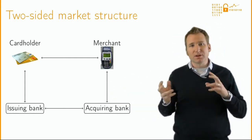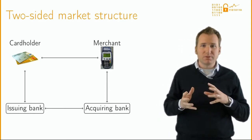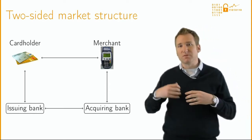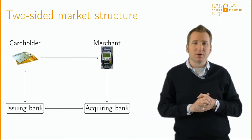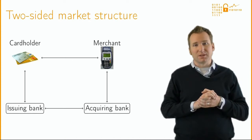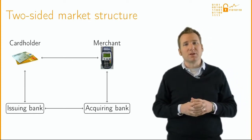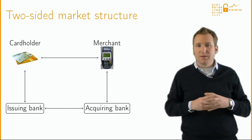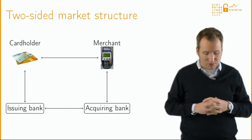Two-sided markets exhibit cross-side network effects. The value of the platform to one type of user depends on the number of users of the other type also in the system. A two-sided market that only attracts one type of user but not the other won't be successful. There's a delicate balance to be struck in order to simultaneously grow both sides of the market, which makes network effects even more challenging to overcome for new entrants.